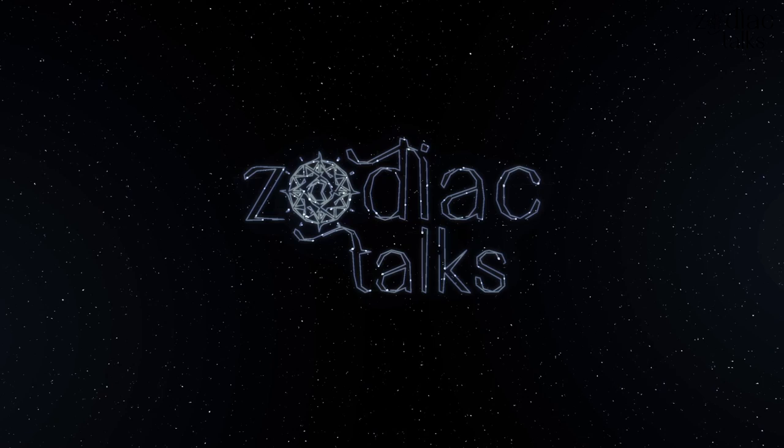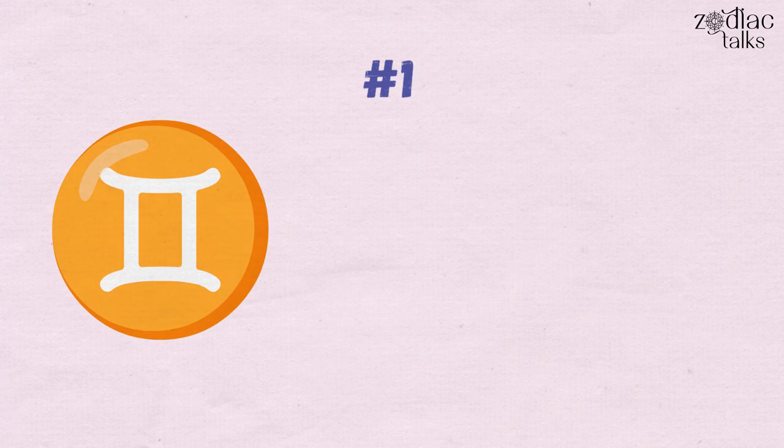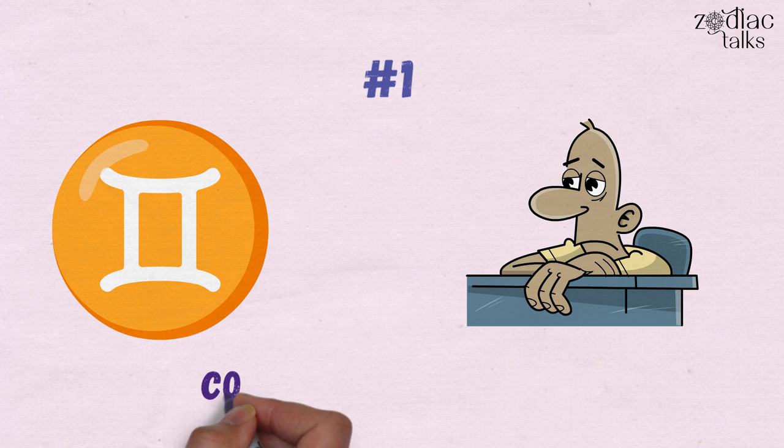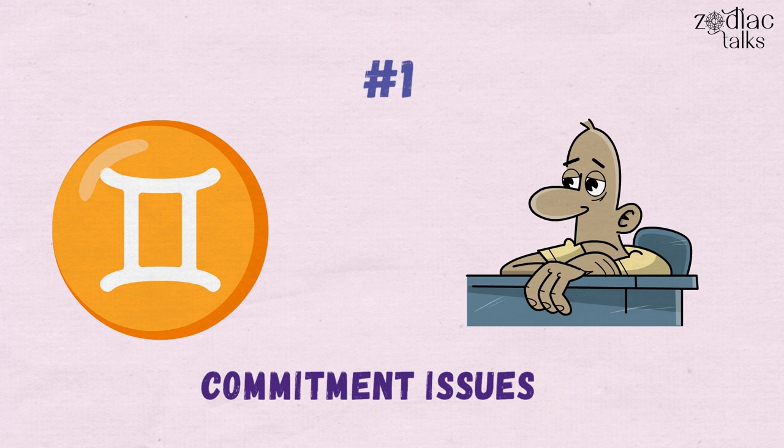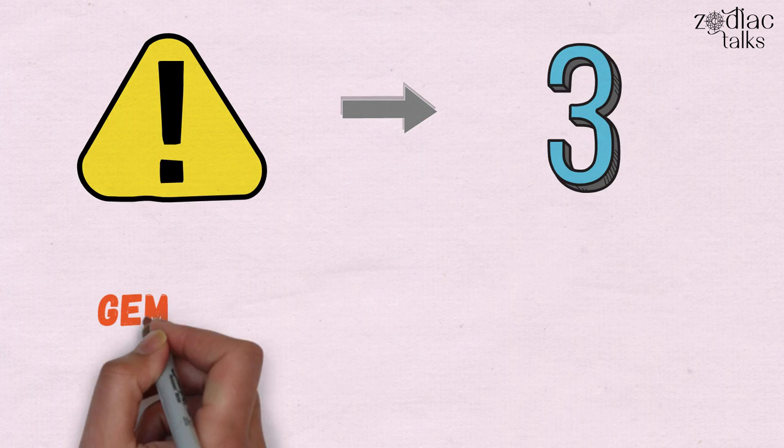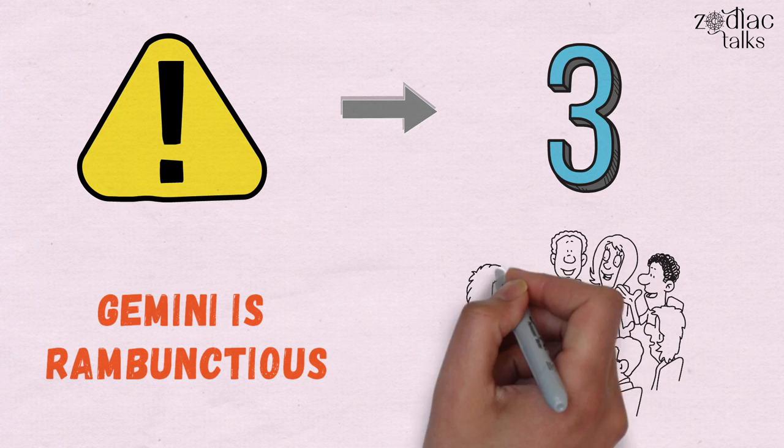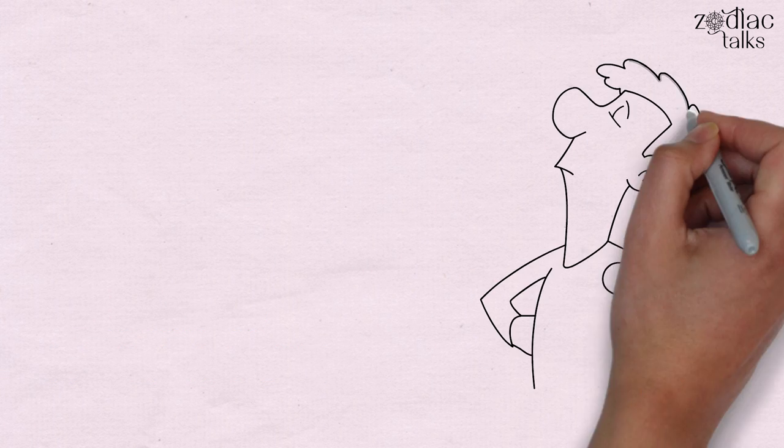Number one: Gemini is a hard sign to pin down, they get bored easily, and they have commitment issues. This is a problem that has three different parts. Gemini is rambunctious. They're in every place all at once. It's next to impossible to keep up with them.